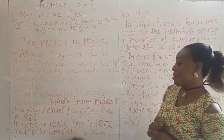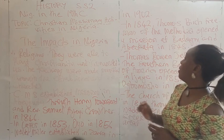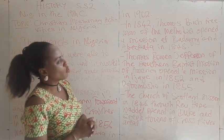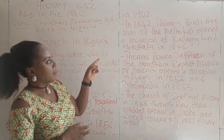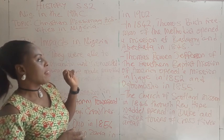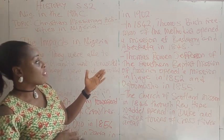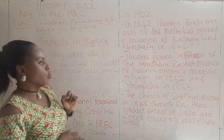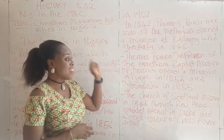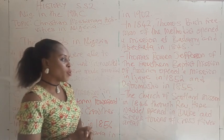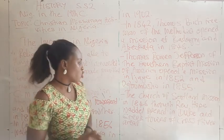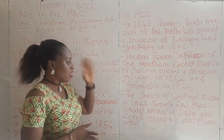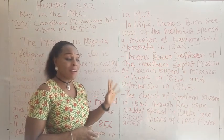Walter Miller also established a mission in Zaria in 1902. In 1842, Thomas Bert Freeman of the Methodists opened a mission at Badagri, and at Abeokuta in 1848. Thomas Bowen Jefferson of the Southern Baptist Mission of America opened a mission in Ijaye in 1852, then extended it to Ogbomosho in 1855. The Church of Scotland Mission — today called the Presbyterian Church — also made their impact through Reverend Opuwadel in 1846, opening a mission in Duke and Creek Towns of the Cross River area, today called Calabar.